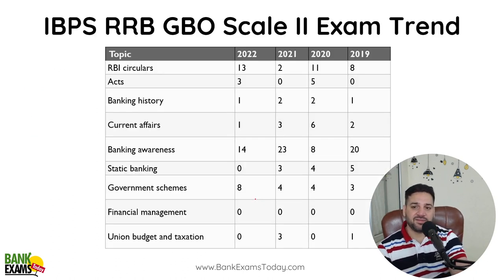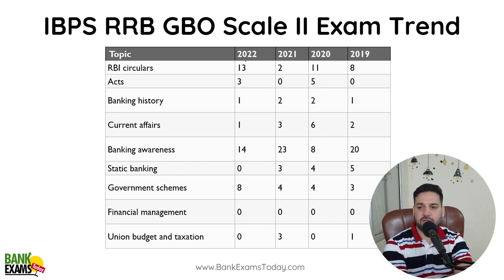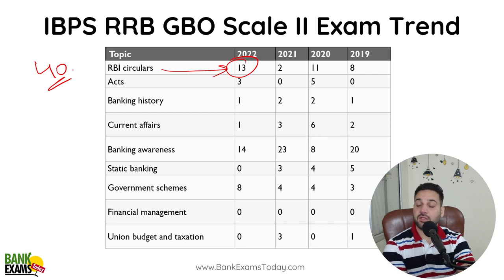First of all, for IBPS RRB GBO, I have shown the table multiple times. You can see a lot of questions from RBI Circulars — 13 questions from RBI Circulars last year out of 40. So that's a big number — 13 out of 40 questions.